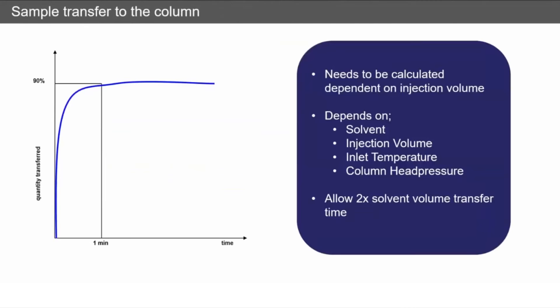We need to think about the transfer onto the column. We need to calculate this based on: what solvent we're injecting, the injection temperature, the inlet temperature, the column head pressure, and the flow going onto the column. We need this time to be roughly two times the solvent volume once it expands to allow 90 to 100 percent to pass onto the column. This is really important because if we run shorter than this we'll get irreproducible injections.